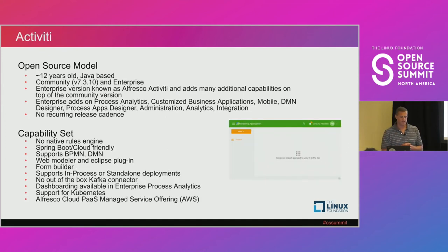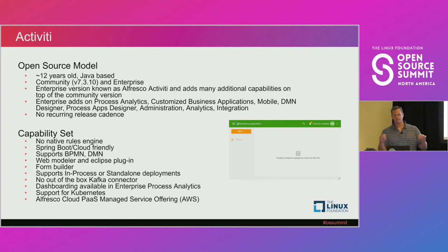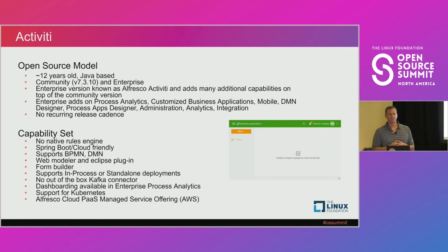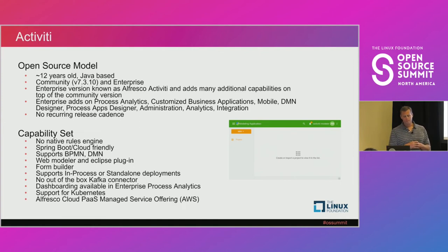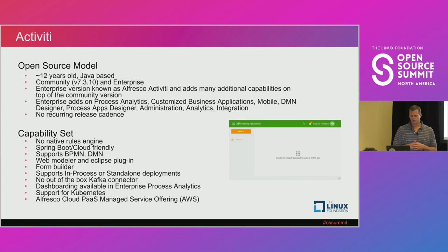Moving on to Activity — about 12 years old, with community and enterprise. Their model is very similar to Flowable, providing the pieces in community with additional parts in enterprise. They are very Spring Boot cloud-friendly — that's one of the common pieces of feedback from engineers and developers who work with it: it's very easy to integrate with Spring Boot. They do have a web modeler and also an Eclipse plug-in. Similar to Camunda, they have a cloud offering — a platform as a service known as Alfresco Cloud.